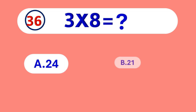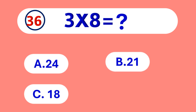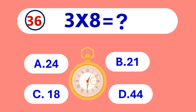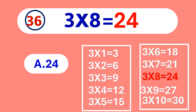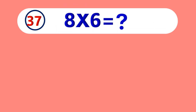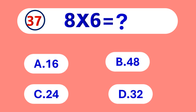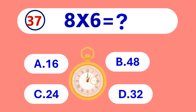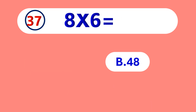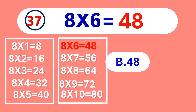3 times 8 is equal to 24. 3 times 8 is 24. 8 times 6 is equal to 48. 8 times 6 is 48.